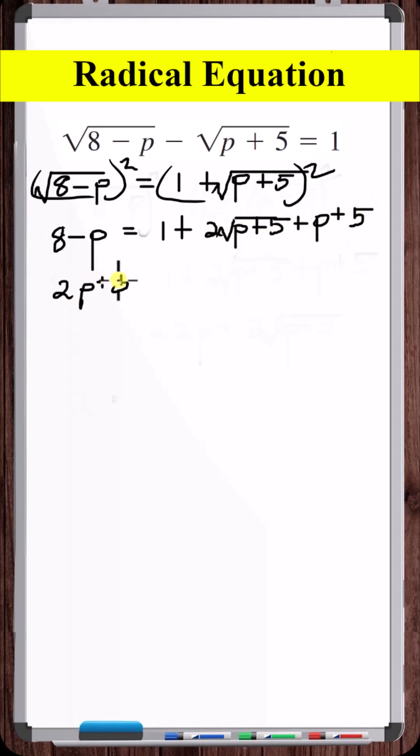Okay, let's isolate this square root of p plus 5 on one side. We're left with, let's divide by 2.